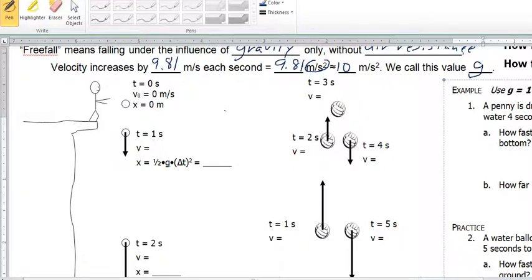We're going to use the approximate value for G of 10. Actually, let's use 9.8. Okay, let's round this to 9.8. So one second later, the velocity will be 9.8 meters per second.